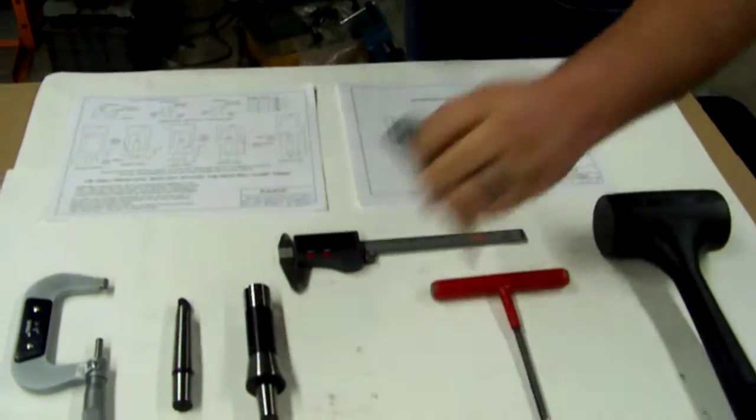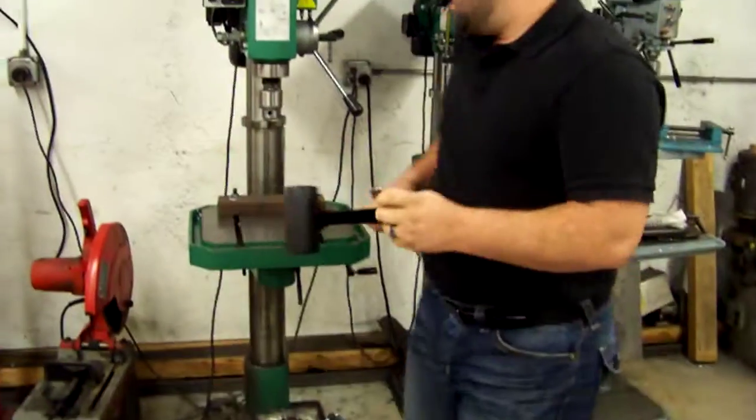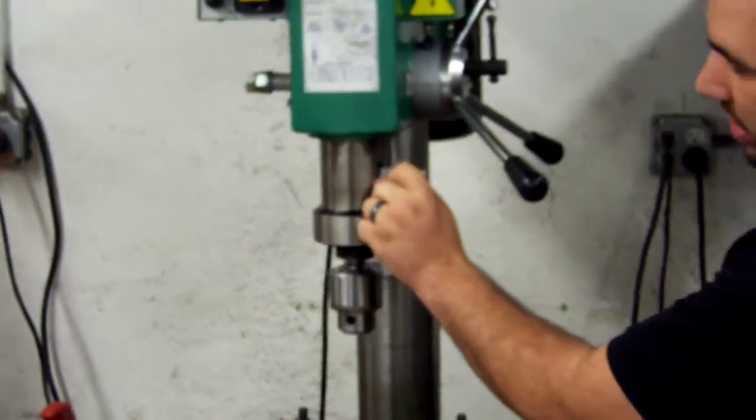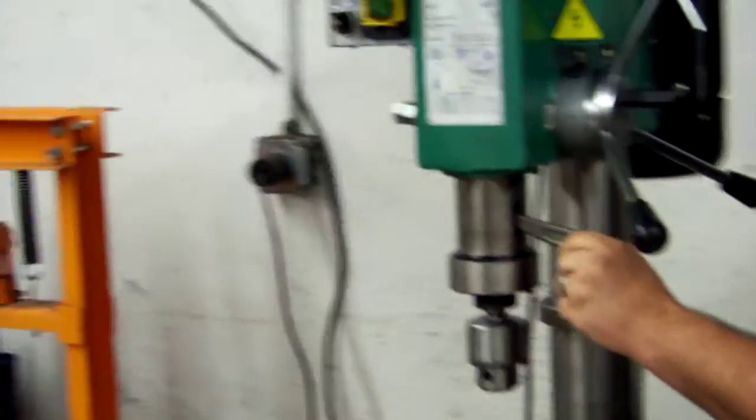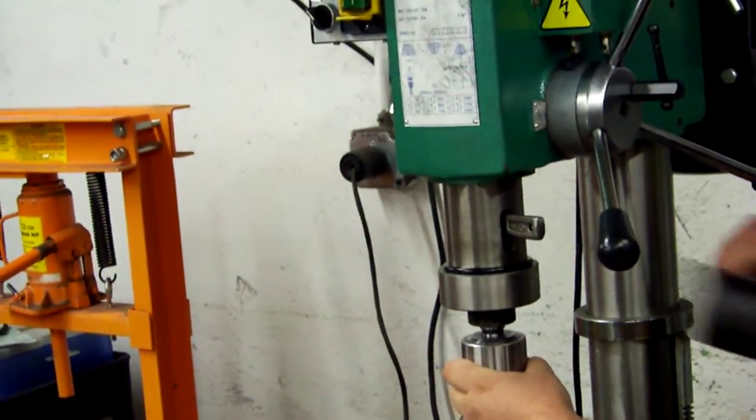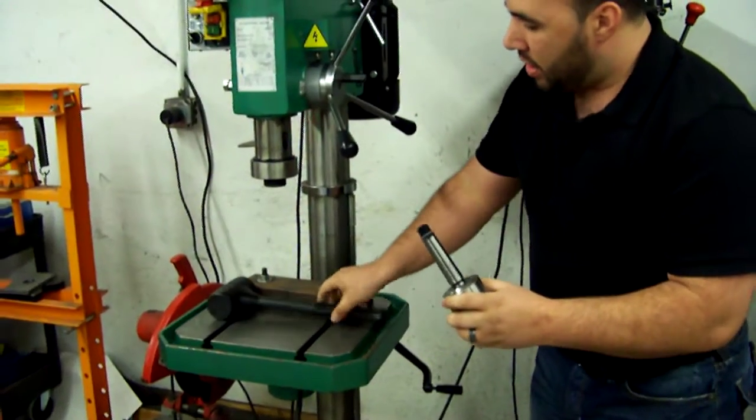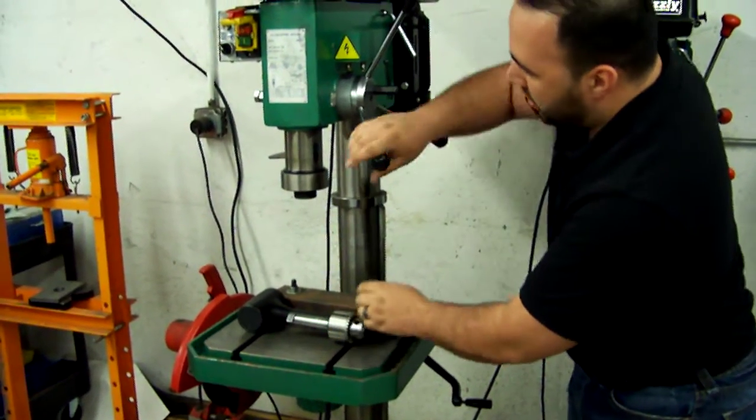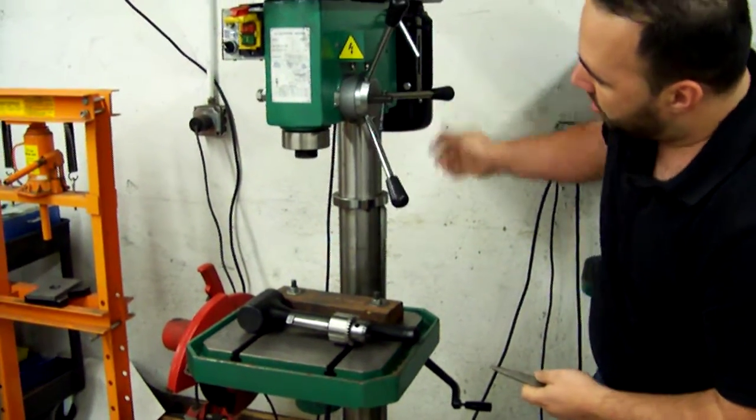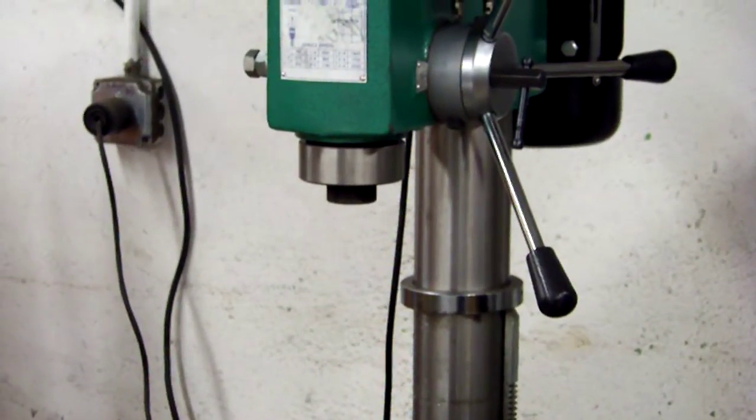With using a simple mallet and a key, you can just pop it in a slot here. By just banging on that, you simply take out the Morse taper out of the drill press and get the dimensions that you're needed, right here and then here, with use of again a caliper or a micrometer.